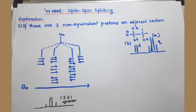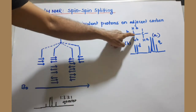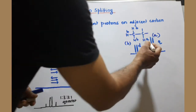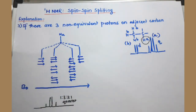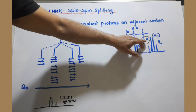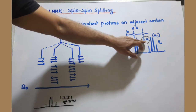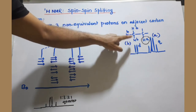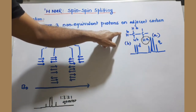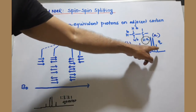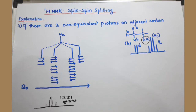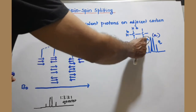If there are three non-equivalent B protons on the adjacent carbon, we consider the absorption of HA. For B protons, there is only one adjacent non-equivalent proton, so N equals 1 — giving a doublet. For HA, there are three non-equivalent adjacent protons, so N equals 3; 3 plus 1 equals 4 — we get a quartet in the ratio 1:3:3:1. The explanation for why this happens is now given.